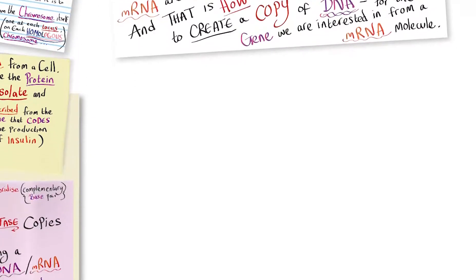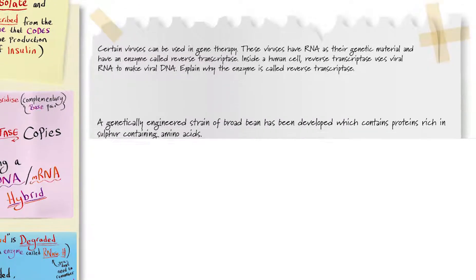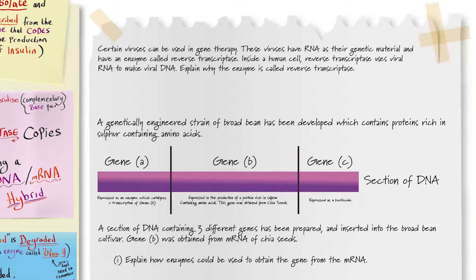Let's take a look at an exam style question to see what you're expected to know from this revision session. As usual you could be asked something pretty straightforward to begin with. Certain viruses can be used in gene therapy. These viruses have RNA as their genetic material and have an enzyme called reverse transcriptase. Inside a human cell reverse transcriptase uses viral RNA to make viral DNA. Explain why the enzyme is called reverse transcriptase.